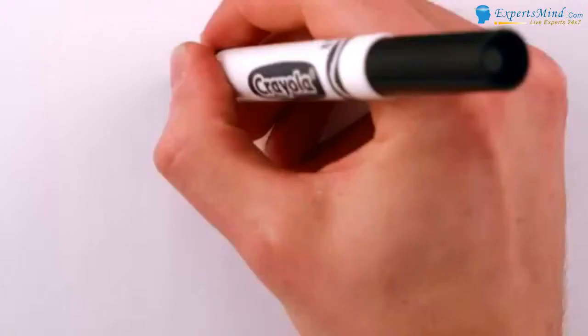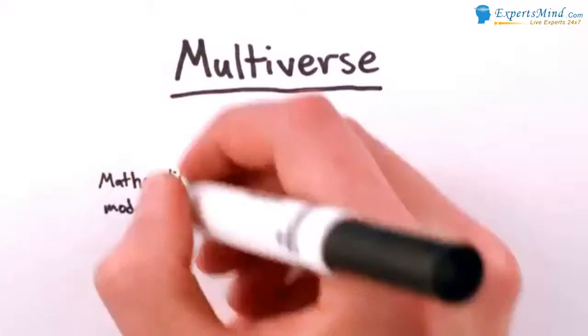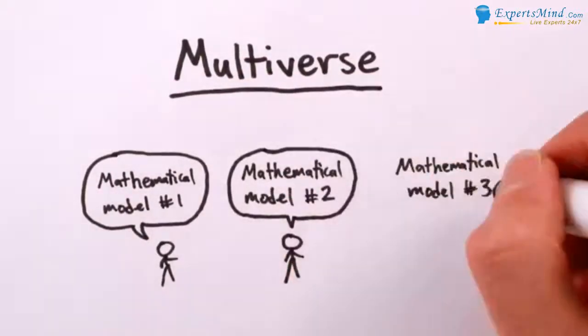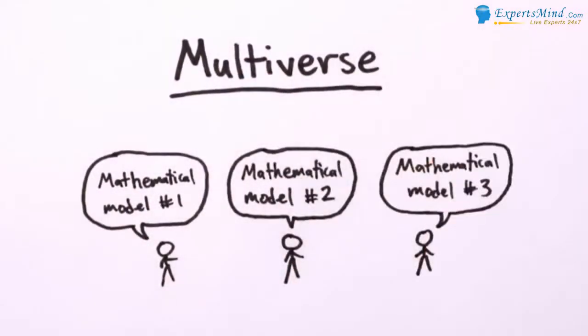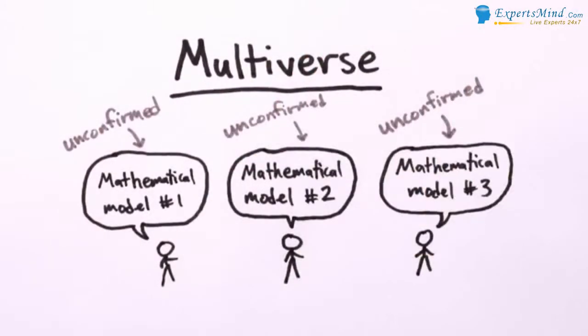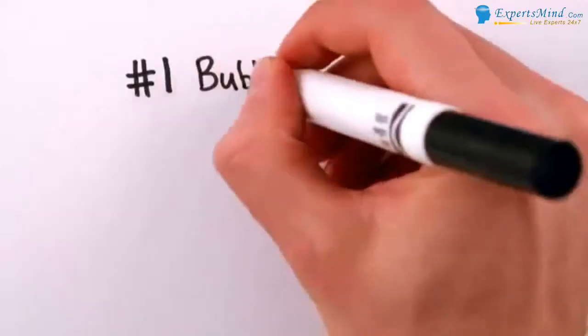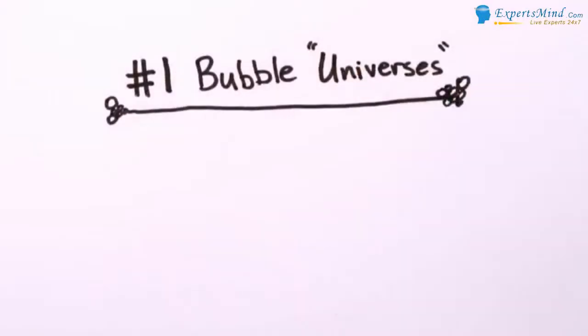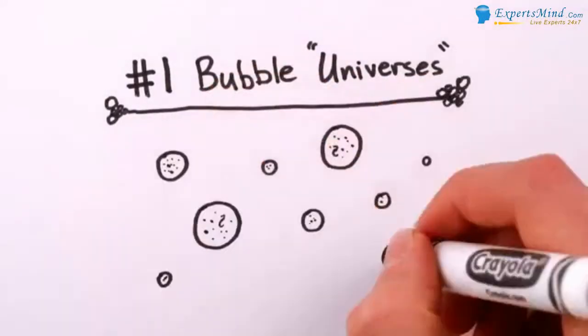So let's cut to the chase. In physics, the word multiverse normally refers to one of three distinct and largely unrelated proposed physical models for the universe. None of which has been tested or confirmed by experiment, by the way. The three multiverse models are Type 1, bubble universes or baby black hole universes. This is the most straightforward kind of multiverse.